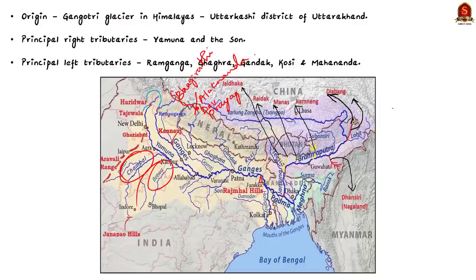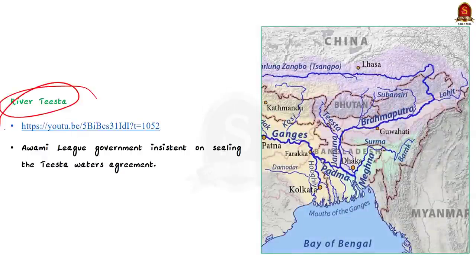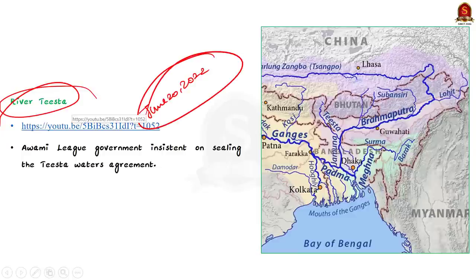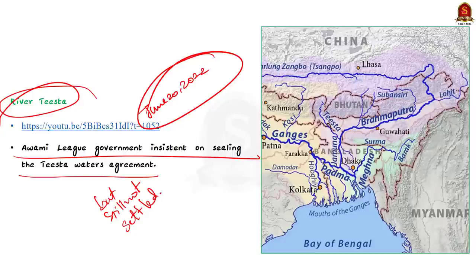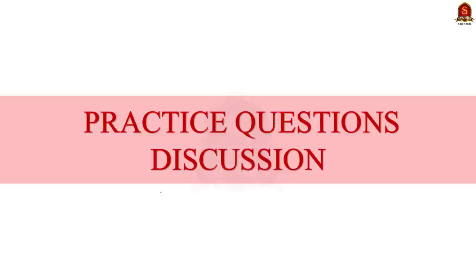Regarding River Teesta and the Teesta agreement, details were covered in the Hindu newspaper analysis of June 20, 2022. The Awami League government has been insistent on sealing the Teesta waters agreement as it has eluded settlement so far. Overall, India has agreed to offer Bangladesh a package on river water related deals, which will be considered a significant advancement in sharing of river resources with Dhaka.